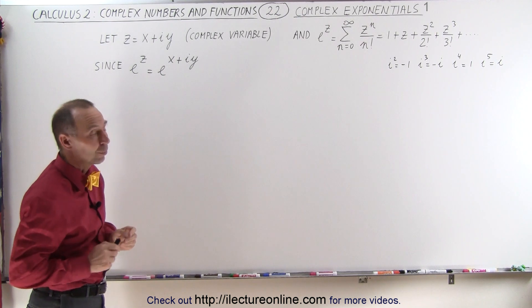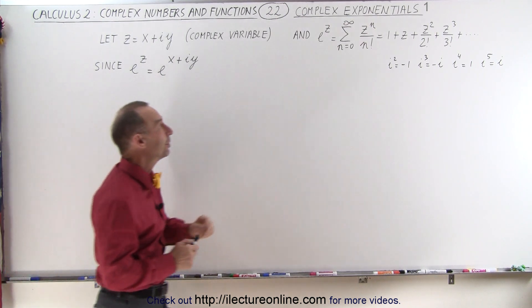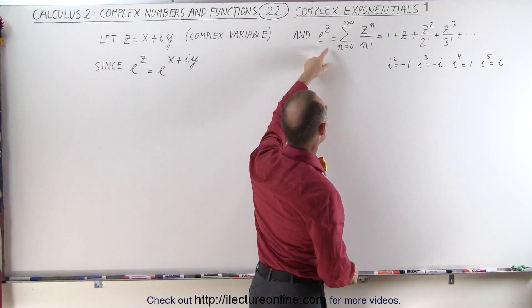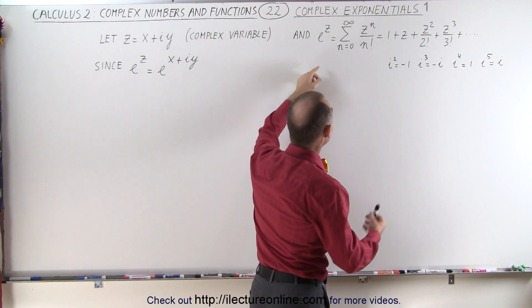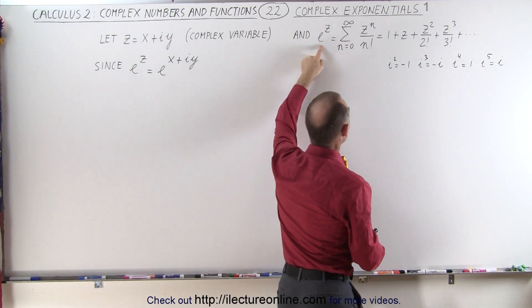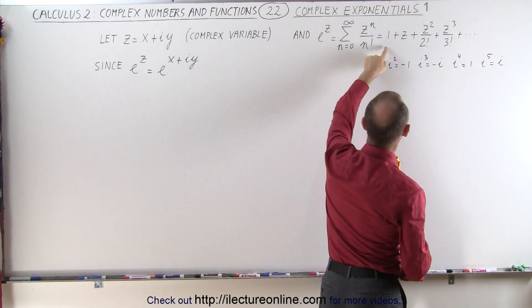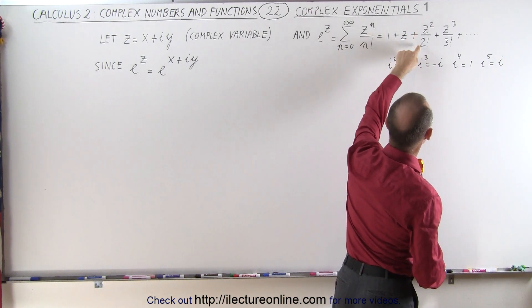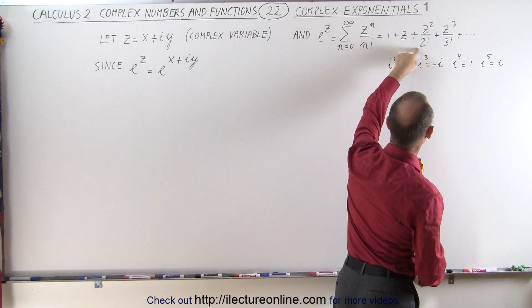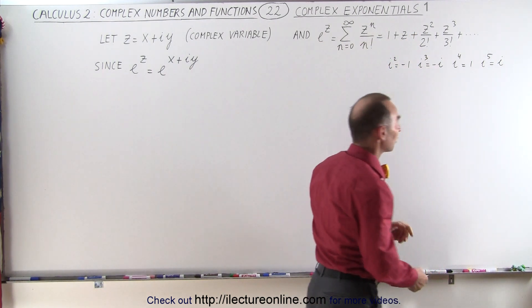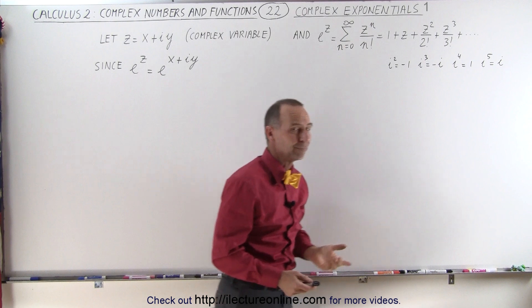We have to remember that e to the z, where z could be anything, can be expressed as an infinite series. Therefore it can be written as 1 plus z, plus z squared over 2 factorial, plus z cubed over 3 factorial, and so forth.